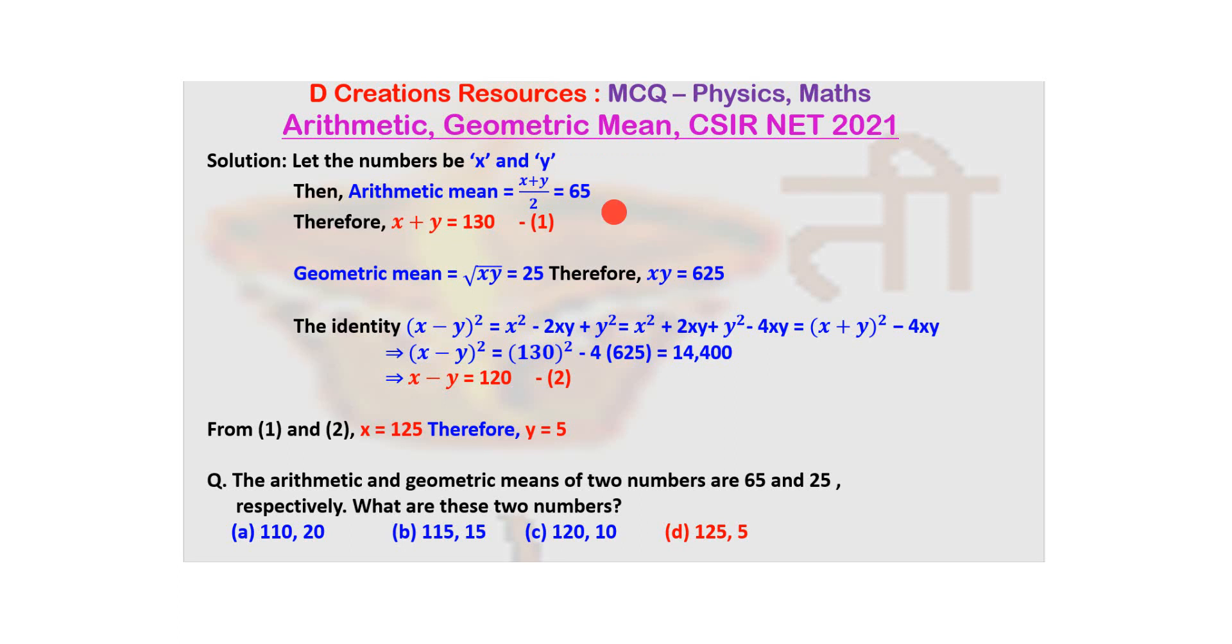We all know that arithmetic mean is basically the addition of those two numbers divided by two. So if X and Y are the numbers, it will be (X + Y)/2, and it is given to be 65. Therefore, X + Y = 130. So you've got one equation here.